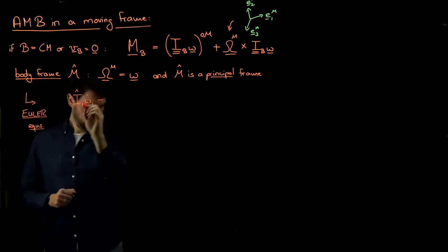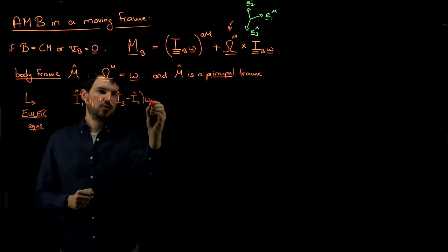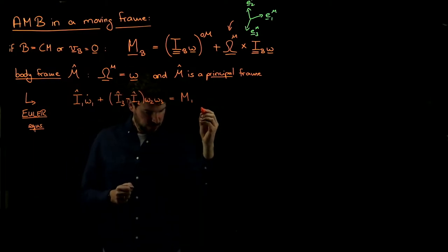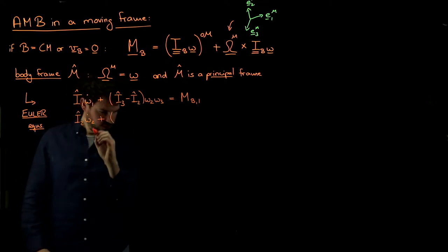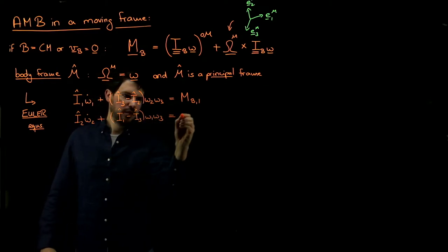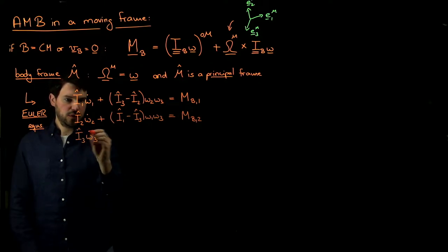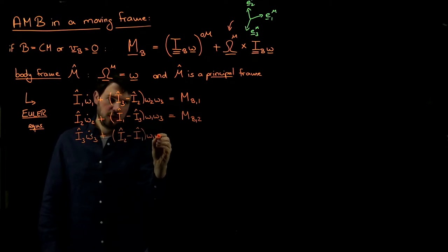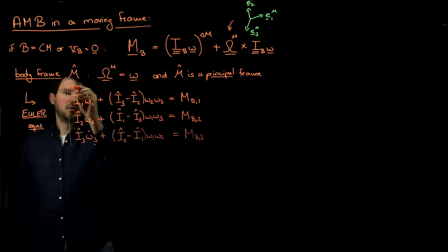The Euler equations look like this: I1-hat times omega-1-dot, plus (I3-hat minus I2-hat) times omega_2 times omega_3 equals the torque about the 1-axis. The second equation: I2-hat times omega-2-dot, plus (I1-hat minus I3-hat) times omega_1 times omega_3 equals the net torque about the 2-axis. And last: I3-hat times omega-3-dot, plus (I2-hat minus I1-hat) times omega_1 times omega_2 equals the net torque about the 3-axis. These are the famous Euler equations.